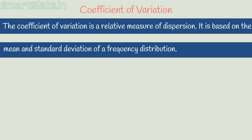The coefficient of variation is a relative measure of dispersion. It is based on arithmetic mean and standard deviation of a frequency distribution. It is also called relative standard deviation.